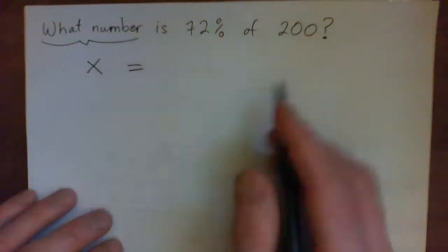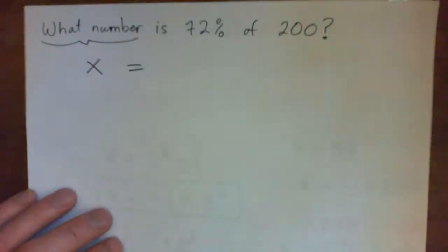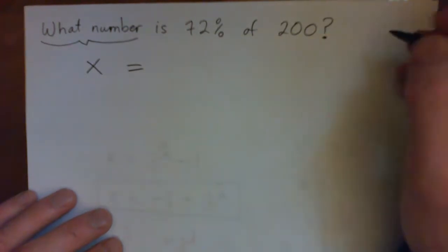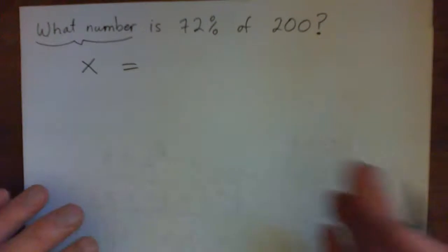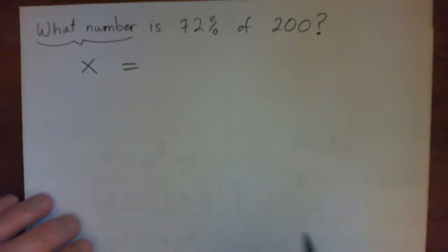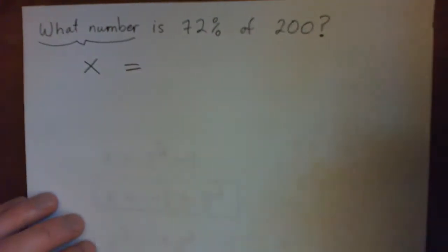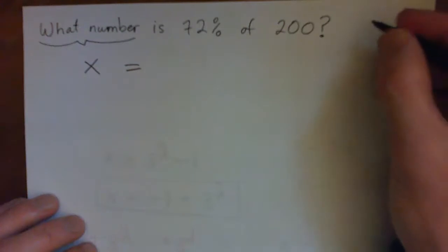So X is 72%, though. Give me that as a decimal. So actually, I mean, most students are just going to memorize how to move the decimal point. I want you all to understand it, though. So write that as a fraction first.